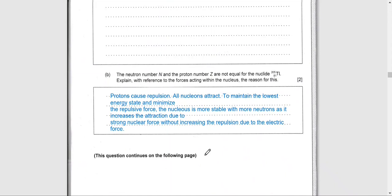Part B: The neutron number N and the proton number Z are not equal for the nuclide thallium-205. Explain with reference to the forces acting within the nucleus the reason for this. There are two forces: the electrostatic repulsive force pushing everything outward, and the strong nuclear force pulling everything inward.